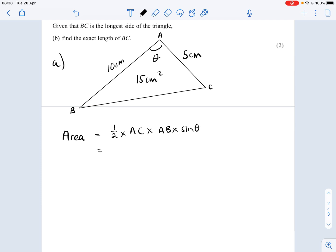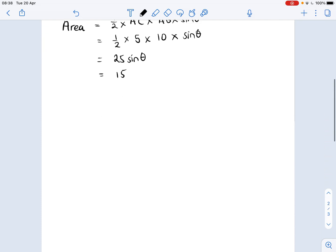So a half AB sine C would be a half times AC times AB times sine theta. So let's get rid of this so we're not confusing our A's, B's, and C's. Okay, so AC is 5, AB is 10, and sine theta is going to stay as it is. So this is 25 sine theta, and we're told that this is equal to 15. So this gives us an expression for sine theta.